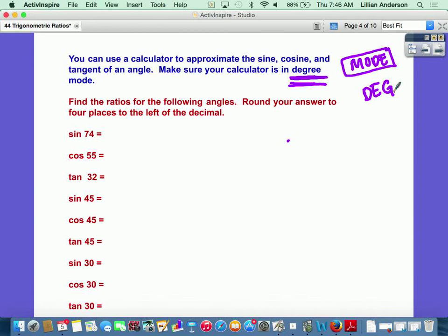So here it says find the ratios for the following angles, round your answer to four decimal places. So it's just as simple as you think.